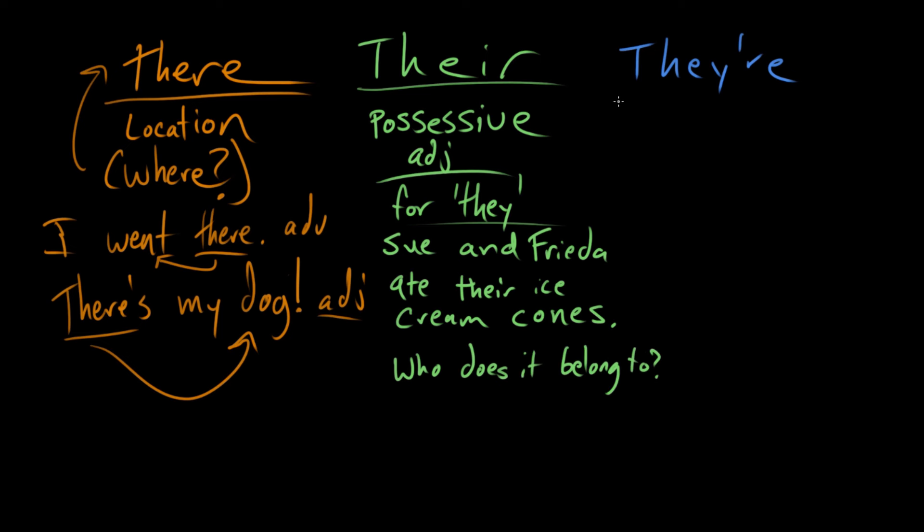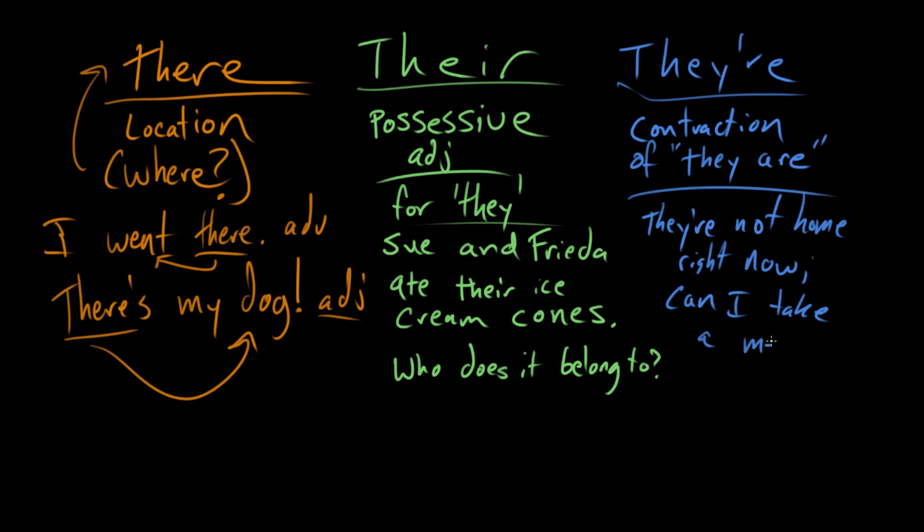So rounding out our trio, the last member of the there, there, there, riders of the apocalypse is T-H-E-Y apostrophe R-E, which is a contraction of they are. So anywhere you would want to say they are, you can smush that together and say they're. So, hey kid, are your parents home? No, they're not home right now. Can I take a message?